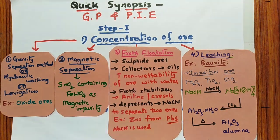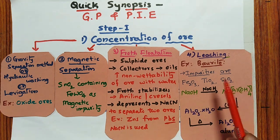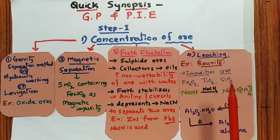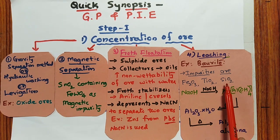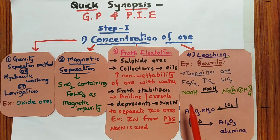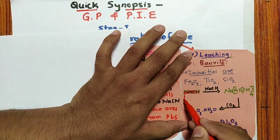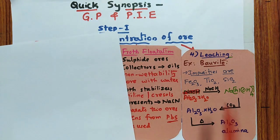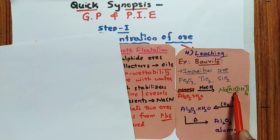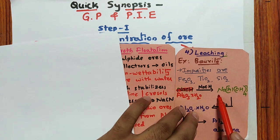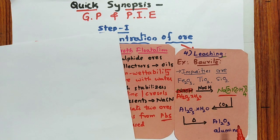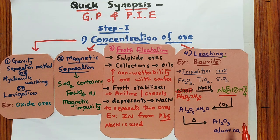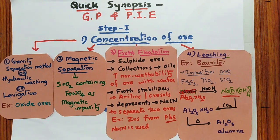Next is leaching. Taking bauxite as an example — impurities present in bauxite are Fe₂O₃, TiO₂, and SiO₂ (this was asked in a previous exam). Al₂O₃·xH₂O reacts with NaOH to form a complex sodium aluminate, which on reaction with CO₂ gives hydrated alumina, and on heating gives alumina. A question was once asked about this complex — sodium aluminate — so remember it. These are the four important methods for concentration of the ore.